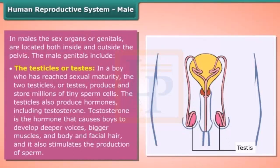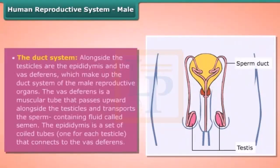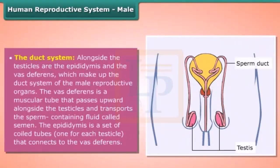The testicles also produce hormones including testosterone. Testosterone is the hormone that causes boys to develop deeper voices, bigger muscles, and body and facial hair. It also stimulates the production of sperm. The duct system, alongside the testicles, includes the epididymis and the vas deferens, which make up the duct system of the male reproductive organs.